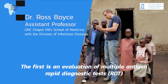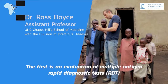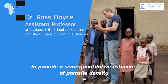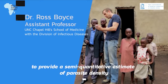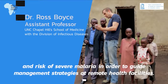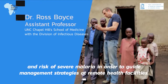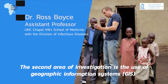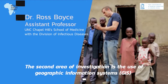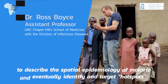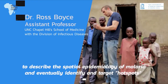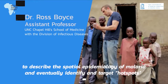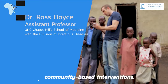The first is an evaluation of multiple antigen rapid diagnostic tests (RDT) to provide a semi-quantitative estimate of parasite density and risk of severe malaria in order to guide management strategies at remote health facilities. The second area of investigation is the use of Geographic Information Systems (GIS) to describe the spatial epidemiology of malaria and identify and target hotspots via community-based interventions.